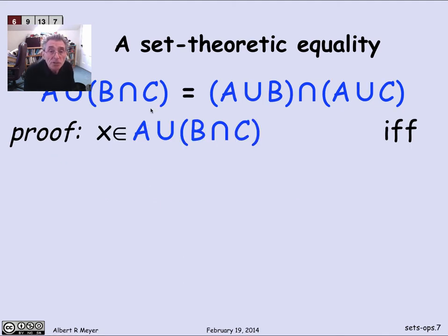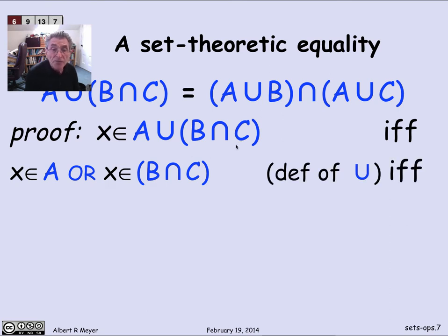So again, we said we were going to prove that two sets are equal by showing they have the same points. So here's the proof. It's going to be a lovely if and only if argument the whole way. So looking at the left-hand side, a point x is in A union B intersection C by definition of union if and only if x is in A or x is in B intersection C. I've just applied the definition of union there.